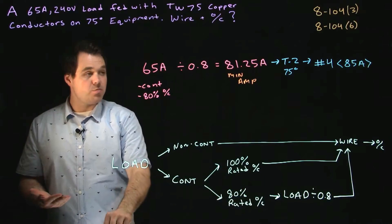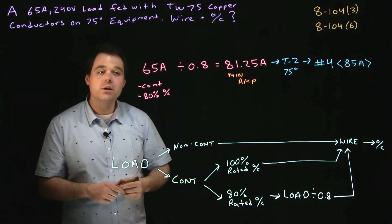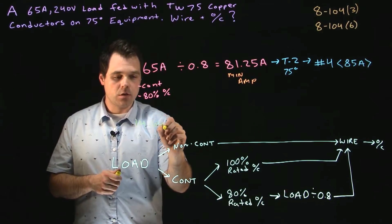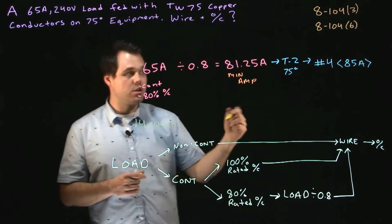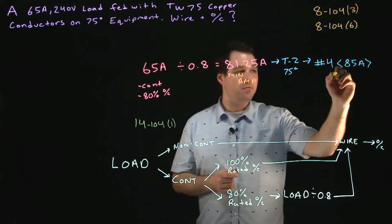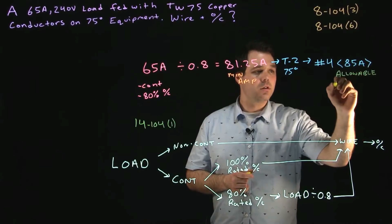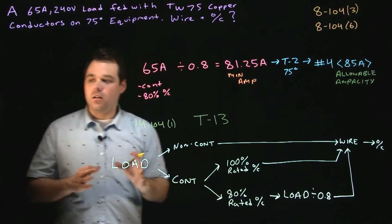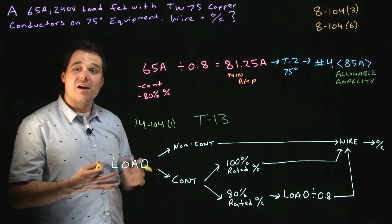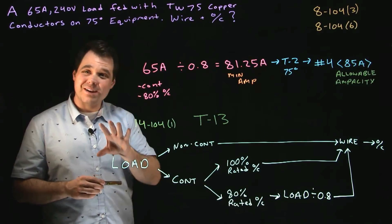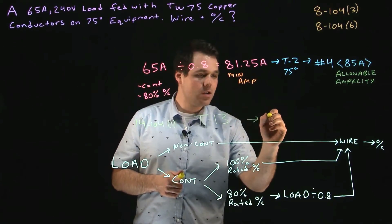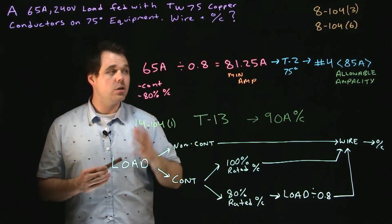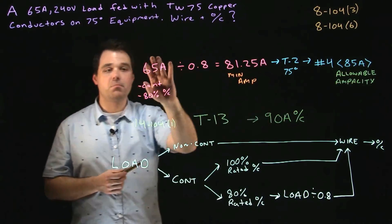The next step after sizing the wire is to size the overcurrent device. We apply 14.104, Subrule 1, which tells us to take the allowable ampacity of the wire — 85 amps — to Table 13. On Table 13 there is no 85-amp overcurrent device available, so we look at the ranges and find we need a 90-amp overcurrent device on this wire. A 90-amp OC is set by code to protect our number 4 wire rated at 85 amps, which is definitely large enough for the 65-amp load.